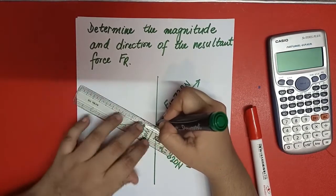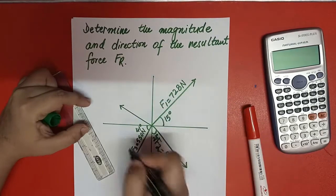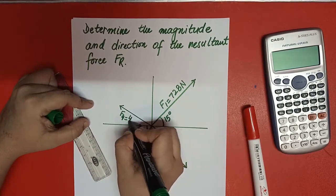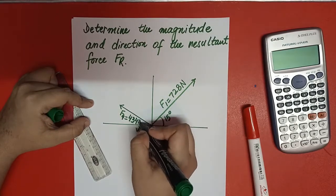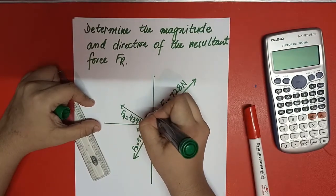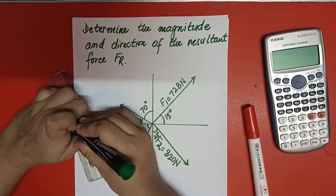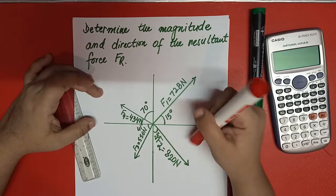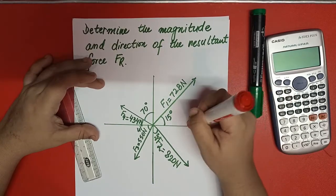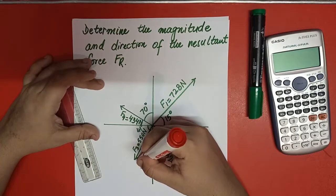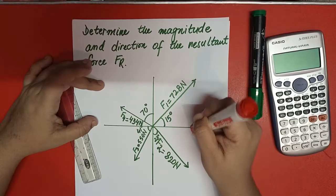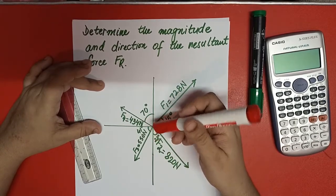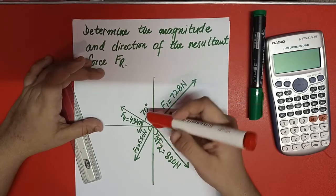F4 is smaller in magnitude than F1, F2, and F3, and the angle here is 70 degrees. The approach is: first find FR1 for F1 and F2 using the parallelogram. Then solve FR1 with F3 to get FR2. Then solve FR2 with F4 to get FR3. FR3 is the final resultant and theta R3 is its direction.